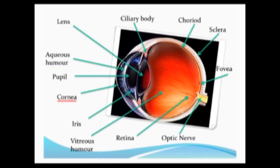The cornea is positioned at the front of the eye — it's the outermost surface of the eye. It's a transparent structure that lets light pass into the eye and also helps focus the light on the retina. So it refracts the light, it bends the light and helps it focus on the retina.